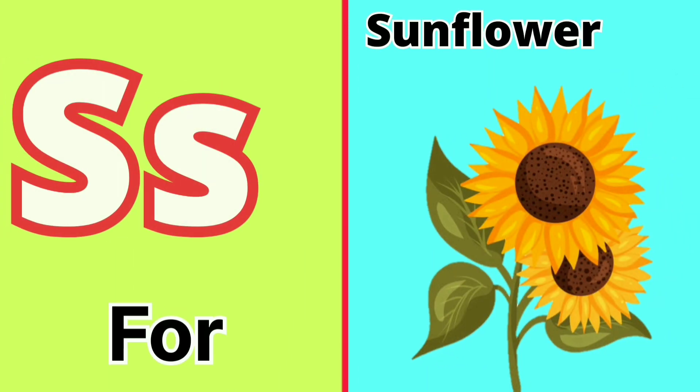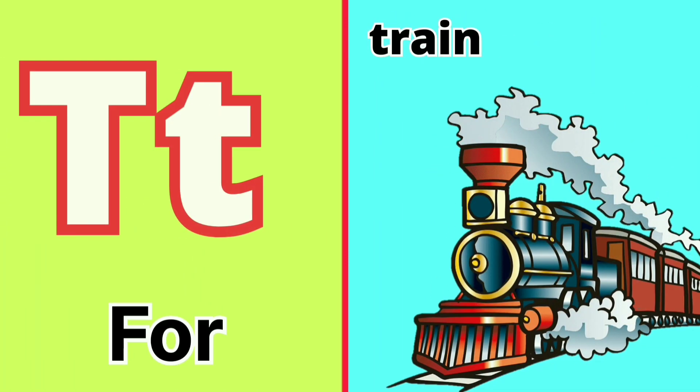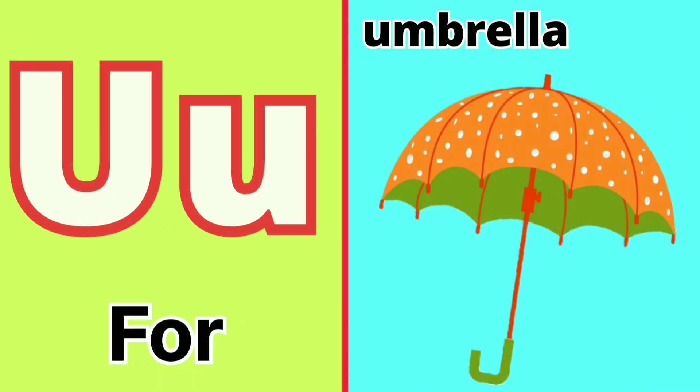S for Sunflower, T for Train, U for Umbrella.